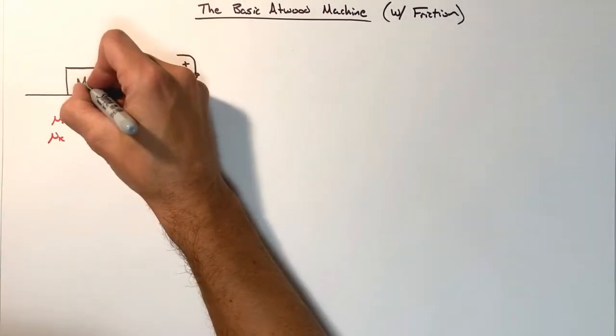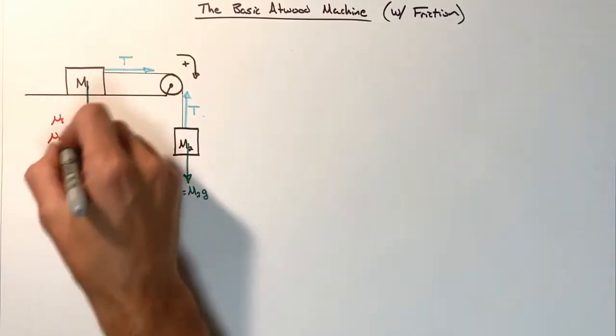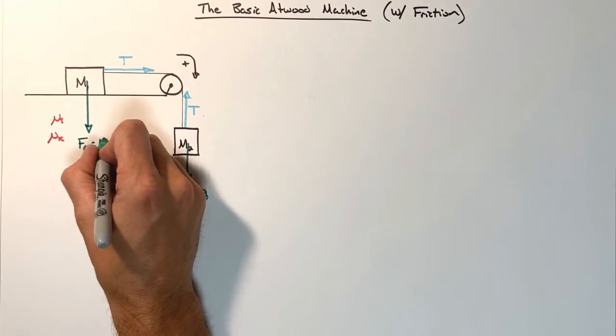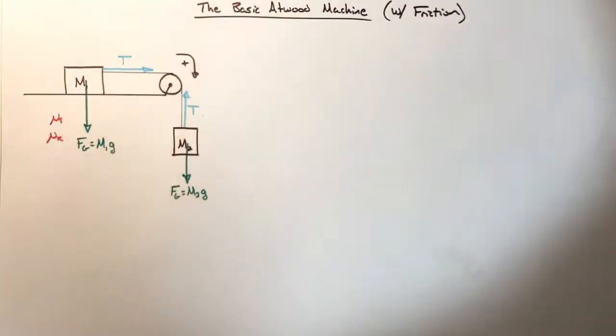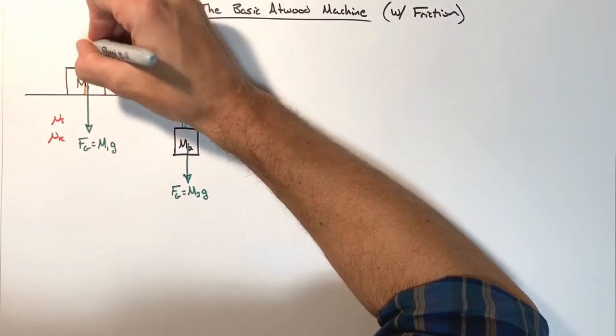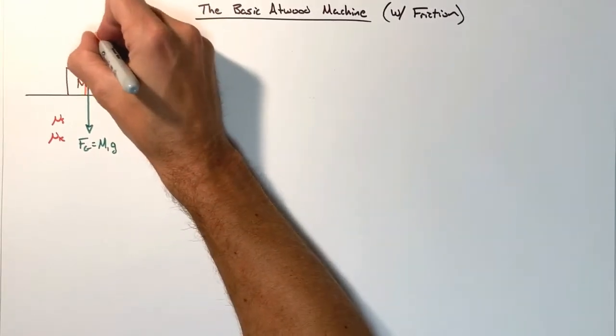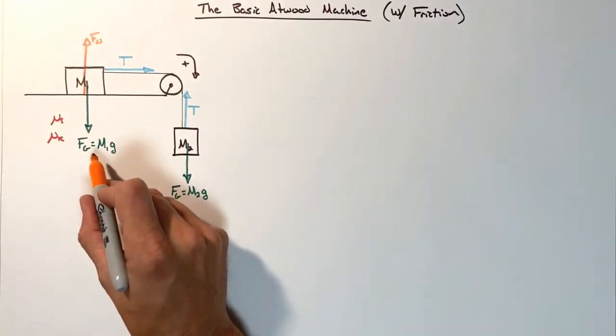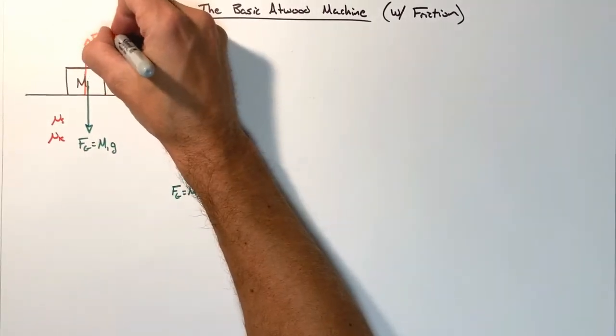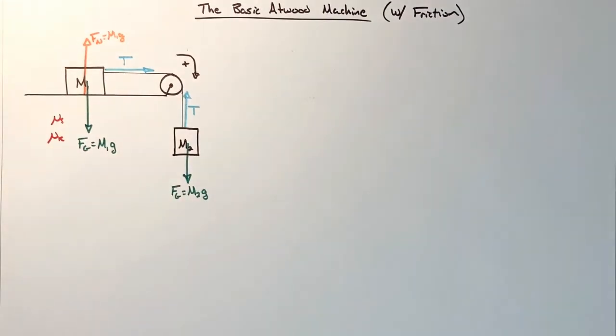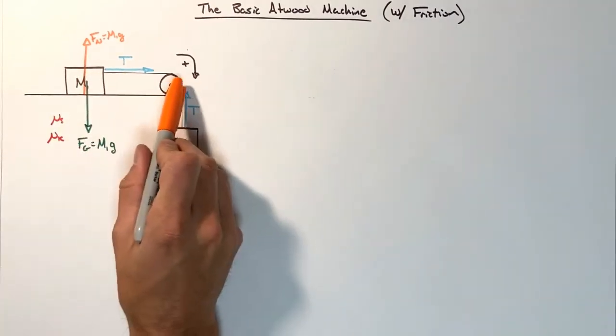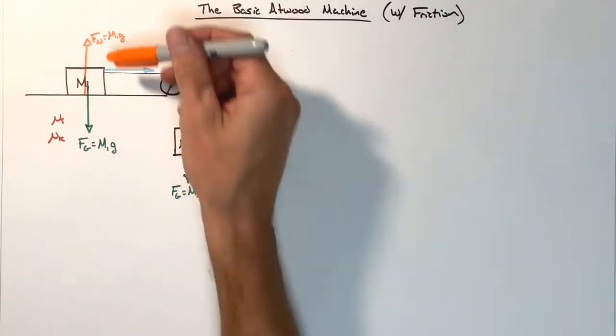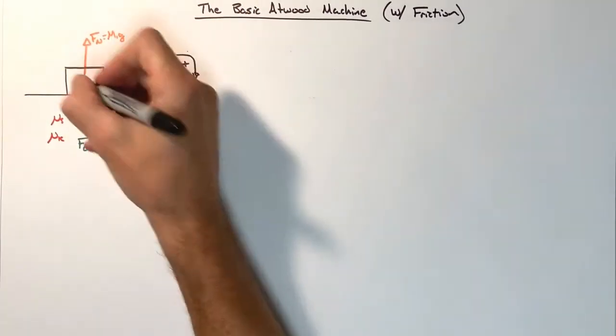Looking at this block up here, we have the weight of this block, that is the force by gravity. That's going to be m1 times g, the acceleration due to gravity. Now, because this block is sitting on a horizontal surface, it's not accelerating vertically. And that means the normal force upward between the block and the ground is going to need to be equal in magnitude to the force by gravity. So this is going to be m1 g. These two forces have to be equal because no matter what occurs in this problem, this block is not going to accelerate vertically.